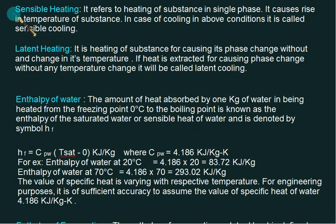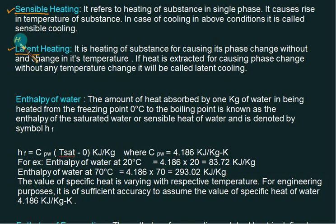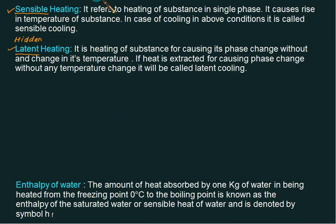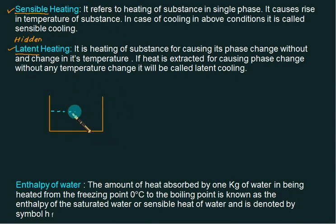We define two terms: sensible heating or sensible cooling, and latent heating or latent cooling. Sensible means the heat is sensed by a thermometer bulb. Latent means the heat is not noticed by the thermometer — normally in a phase change process, whatever heat is supplied will not be recorded by the thermometer, and that part is called latent heating.